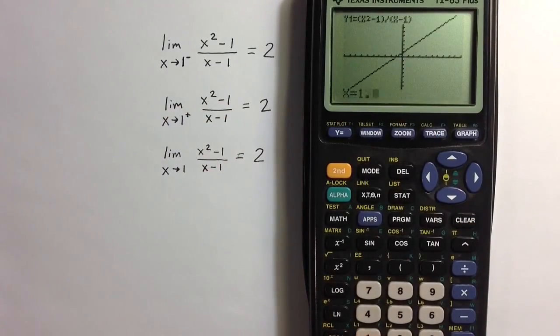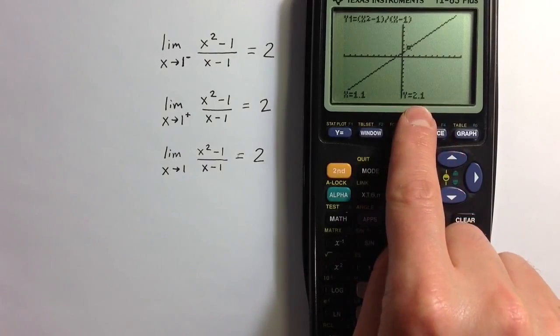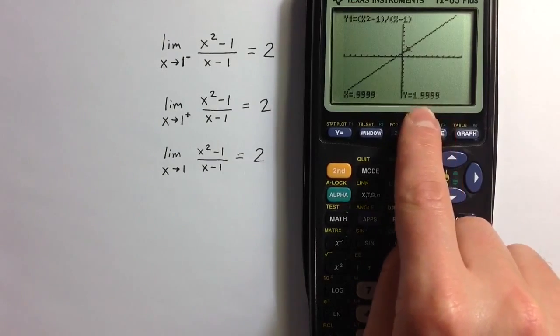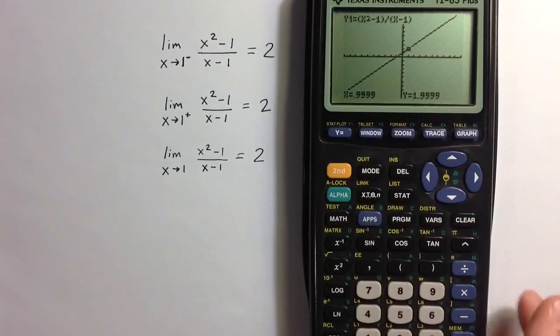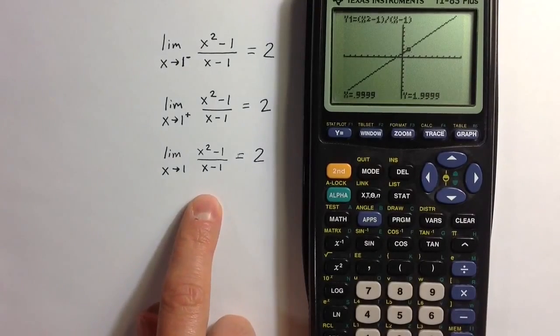But if I type in 1.1, I can see that the value of the function is 2.1. If I type in 0.9999, a bunch of 9s, again, we see the function is very close to 2, 1.99999. So we can confirm from the graph what we saw in the table.